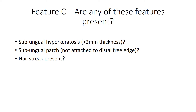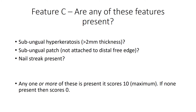The final part of the calculation is Feature C. You ask whether any of three features are present in the nail you're treating: firstly, is there any subungual hyperkeratosis greater than two millimeters in thickness — something you can measure by looking at the end of the nail. The other two features are a subungual patch and a nail streak, which we'll define in a moment. The key point is: if any one or more of these are present the score is 10; if none are present the score is zero.